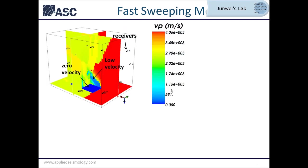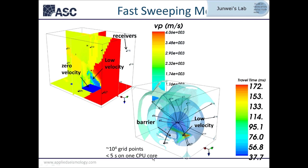Here is an example of a travel time field calculated using the fast sweeping method. The model is very complicated, adapted from a mining case, with strong discontinuities between high and low velocity regions and a zero-velocity barrier. Using one CPU core, it takes less than five seconds for a model with 10,000 grid points. The isosurface of the travel time field shows the wave propagating away from the point source, concentrated in low-velocity regions where propagation is significantly slow.